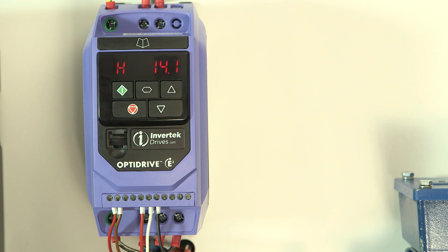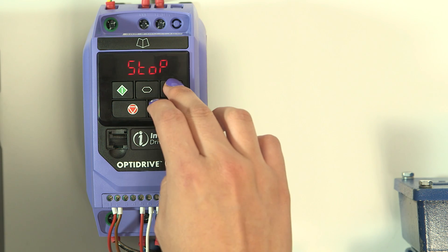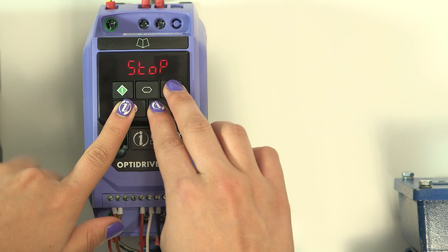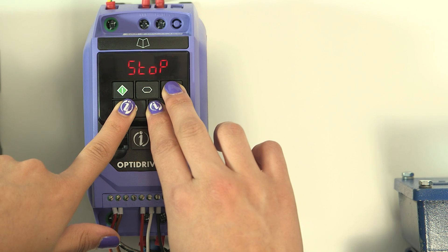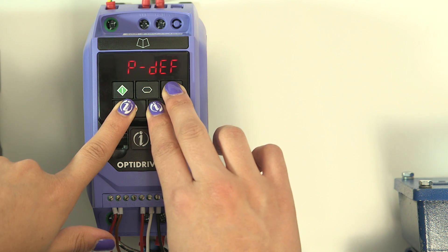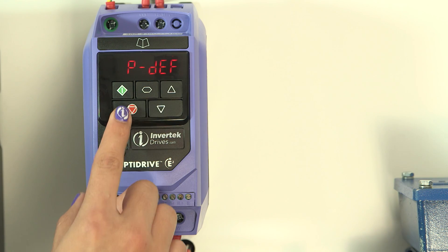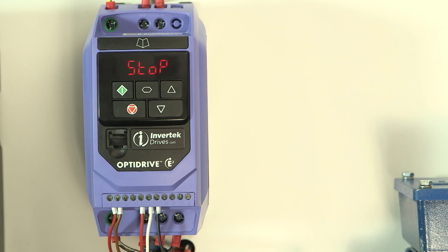If you get stuck, you can easily reset all the parameters to the factory settings by stopping the drive. Then press up, down, and stop buttons together for a second until VDEV shows up. Then reset the drive with the stop button and start again.